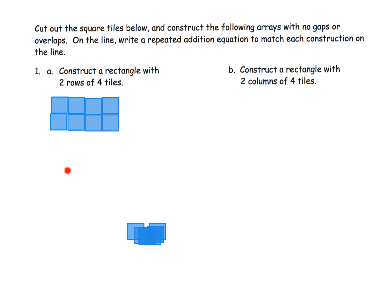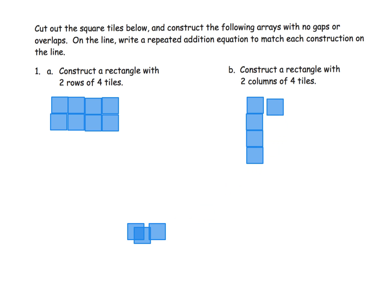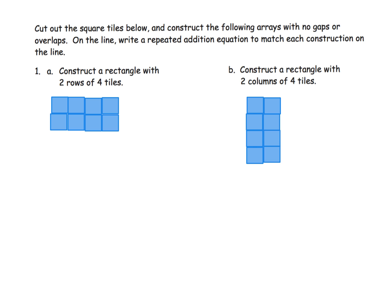I'm going to skip to part B, which says construct a rectangle with two columns of four tiles. So I'm going to do two columns: one, two, three, four — and then one, two, three, four.